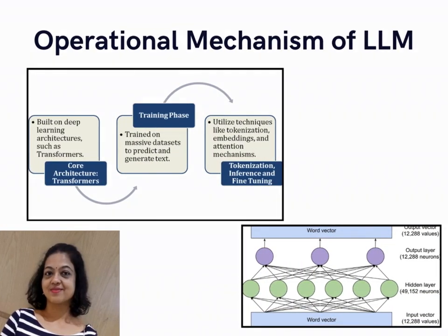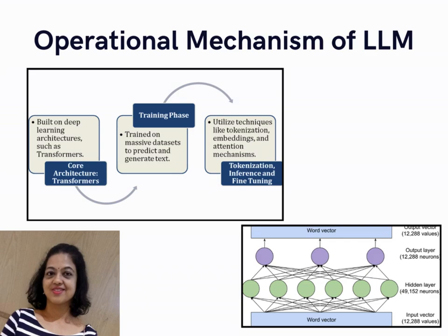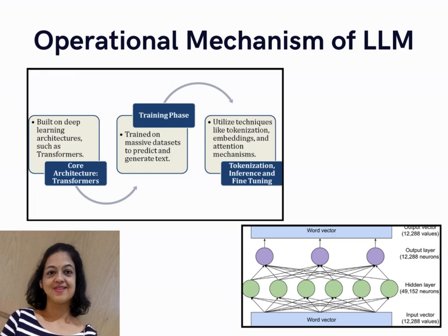The operational mechanism of LLMs: the first diagram illustrates the life cycle of a language model, highlighting three major phases. The core architecture phase uses Transformers — the foundation of modern language models like ChatGPT. Transformers rely on mechanisms such as self-attention to understand relationships between words in a sentence and across sentences, allowing for efficient parallelization and making them scalable for large datasets.